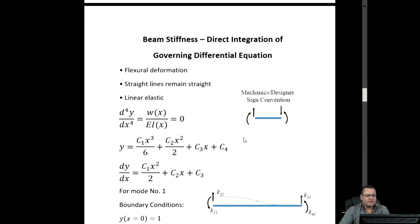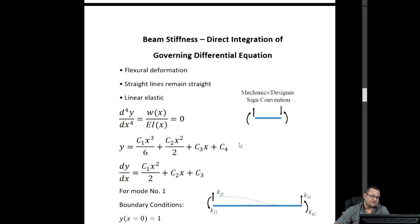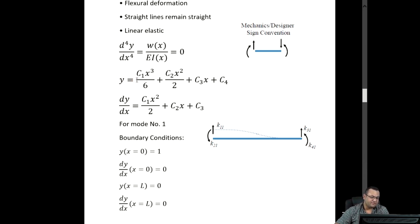Now we will use another approach to derive the stiffness coefficients, using the same assumptions as before. This second approach is called the direct integration of the governing differential equation. From simple beam theory, the fourth derivative of the deflection equation with respect to x equals the load divided by the flexural rigidity. Since the load is 0 — we are dealing with a beam element with loads only at the ends, so the uniformly distributed load is 0 — we integrate 4 times to get: y equals C1 x cubed over 6 plus C2 x squared over 2 plus C3 x plus C4.